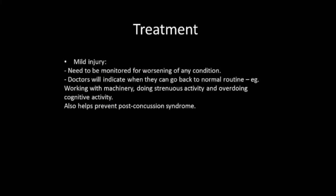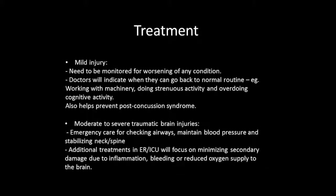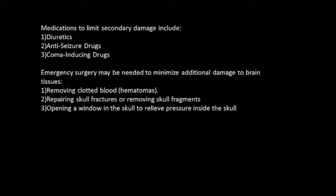Now let's take a look at the general forms of treatment available for TBI. Treatment can take weeks to months depending on the severity and region of the brain affected. For mild injuries, simply over-the-counter painkillers are prescribed. Patients may need to be monitored for worsening of any condition, and doctors will indicate when they can go back to normal routines. Being monitored also helps prevent post-concussion syndrome. For moderate to severe traumatic brain injuries, emergency care is needed to ensure adequate oxygen and blood supply and to maintain blood pressure to prevent further injury to the head or neck. Medications to limit secondary damage include diuretics, anti-seizure drugs, and coma-inducing drugs. Emergency surgery may be needed to remove clotted blood or hematomas, repair skull fractures or remove skull fragments, and open a window in the skull to relieve pressure inside the skull.